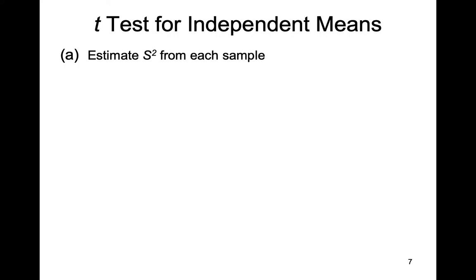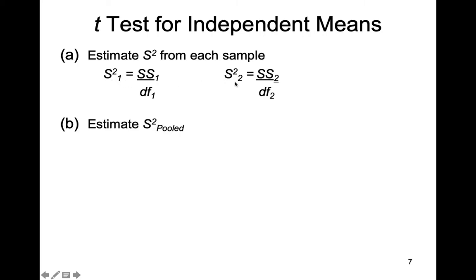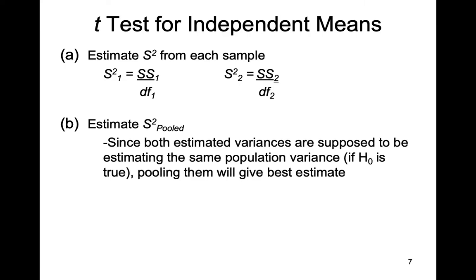The process is to come up with an estimate of population variance from each sample by taking the raw data, calculating the sum of squared differences from the mean, and dividing by degrees of freedom. Once we have an estimate for population one and population two, we pool those estimates together. The logic is that because both estimated variances are supposed to estimate the same population variance — which is an assumption of this test — pooling them gives us the best estimate.